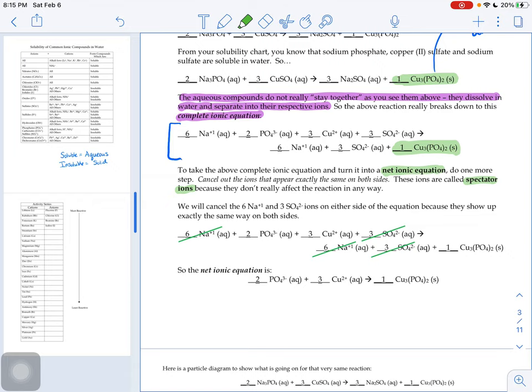So if we look at the left-hand side versus the right-hand side of our reaction, when we look at our sodium, on the left-hand side of the reaction, we have 6 Na+1 aqueous. On the product side, 6 Na+1 aqueous. Absolutely nothing happened to the sodium throughout the course of the reaction because it looks exactly the same on both sides.